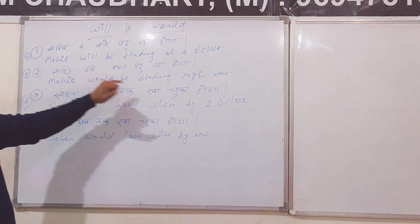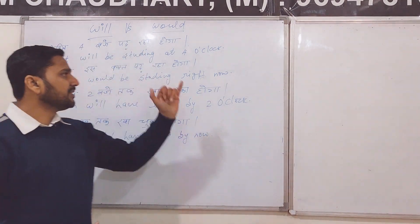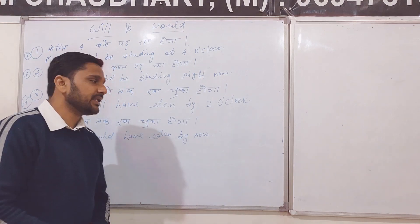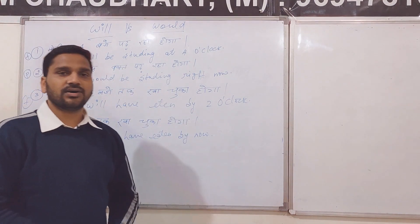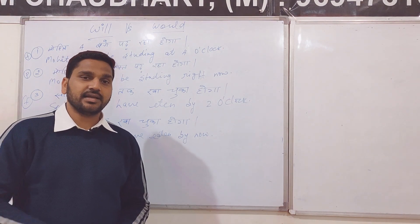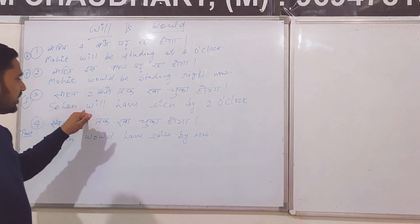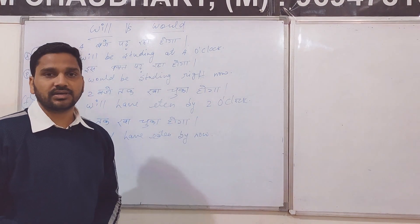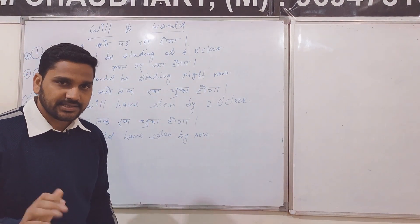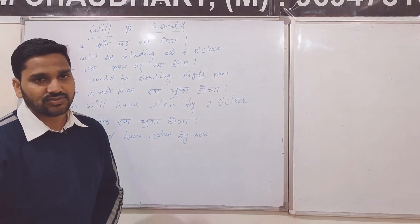So the English sentence becomes: 'Mohit would be studying right now.' I hope the difference is becoming clear. Let's take another example: 'Sohan dow baje tak kha chuka hoga' — Sohan will have eaten by two o'clock. Here we use Will because we are talking about the future. So: 'Sohan will have eaten by two o'clock.'